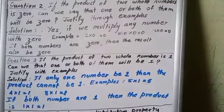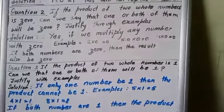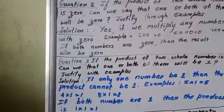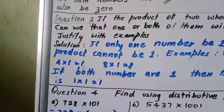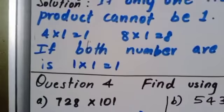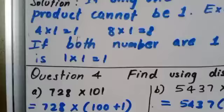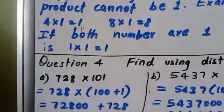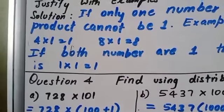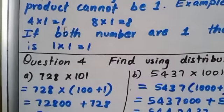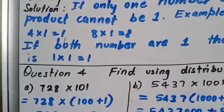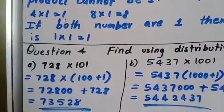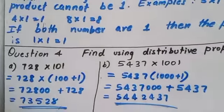Next question number 4: Find using distributive property. As I mentioned in the introduction video, distributive property says that we have to distribute, means in the bracket who are present, we have to distribute for everyone. 728×101. We have to split 101. Why? Because it makes the work so easy if there are 0s. See 728×100 we will be getting double 0, so 72,800. 728×1 we will get the same number. Just if you add, we will be getting 73,528.